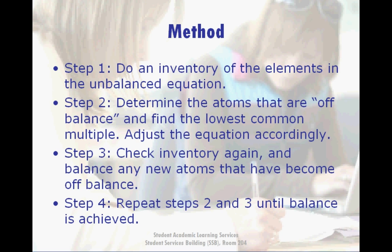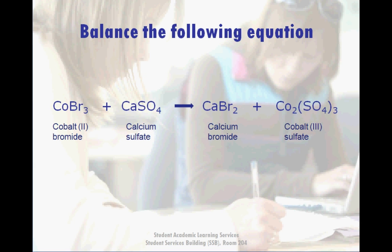And finally, ensure the coefficients in your final, balanced equation are in their lowest terms. Here is our unbalanced equation. This time, we are reacting cobalt-2 bromide with calcium sulfate and producing calcium bromide and cobalt-3 sulfate.